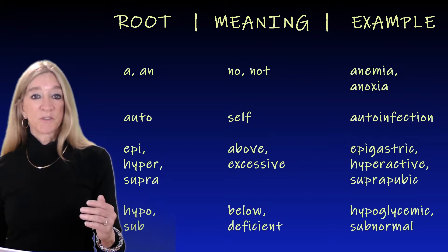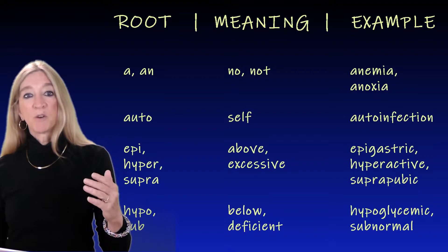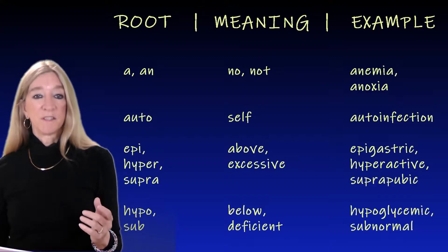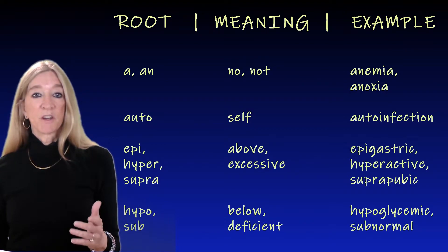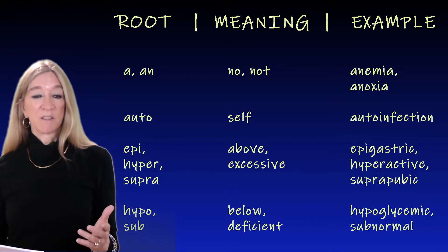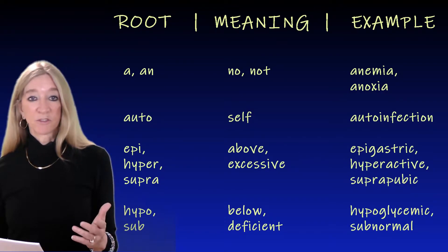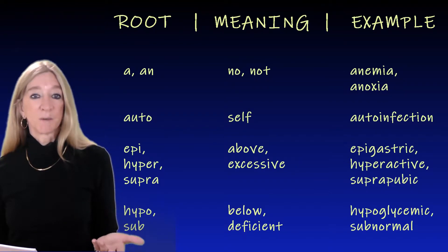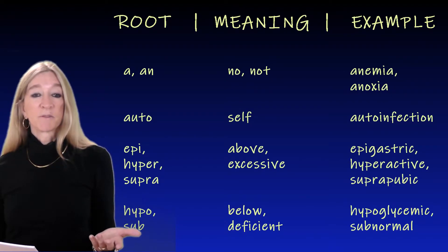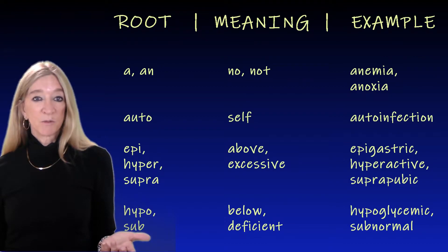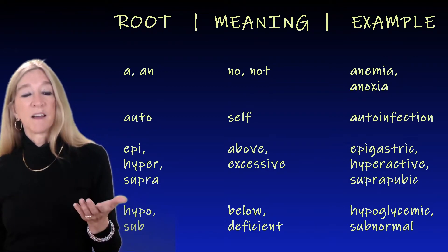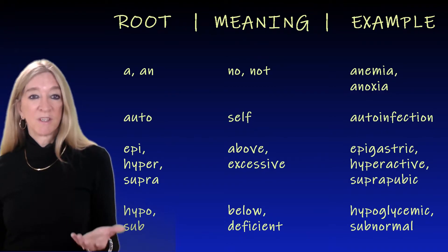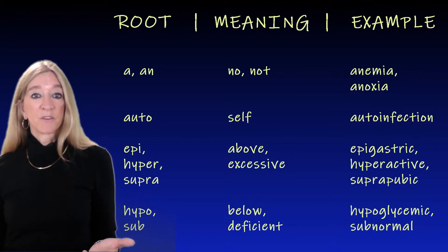The next roots are the opposite, 'hypo' and 'sub,' meaning below or deficient. Examples are hypoglycemic — not having enough sugar in the blood — or subnormal, below normal, like a subnormal temperature. And of course examples from everyday language: subterranean, under the earth; suboptimal, less than optimal; subordinate, lower in order.